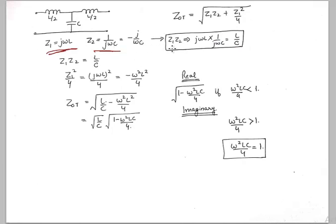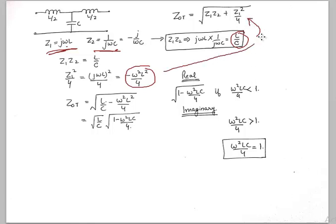Our formula has Z1·Z2 and Z1²/4. We calculate Z1·Z2: multiplying jωL by 1/(jωC) gives L/C. And Z1²/4 = (jωL)²/4 = −ω²L²/4. Substituting these into the characteristic impedance equation gives ZOT = √(L/C − ω²L²/4).